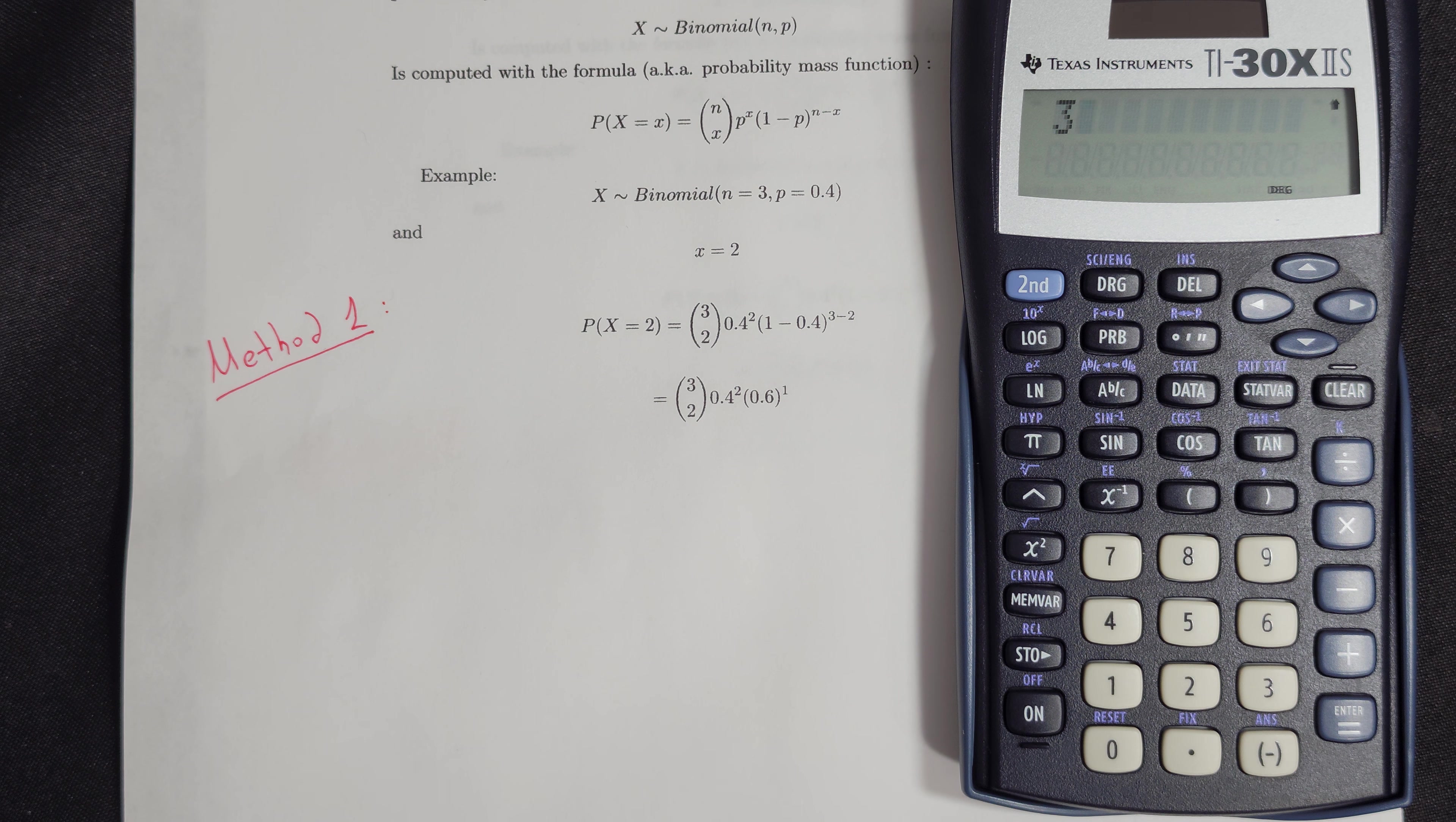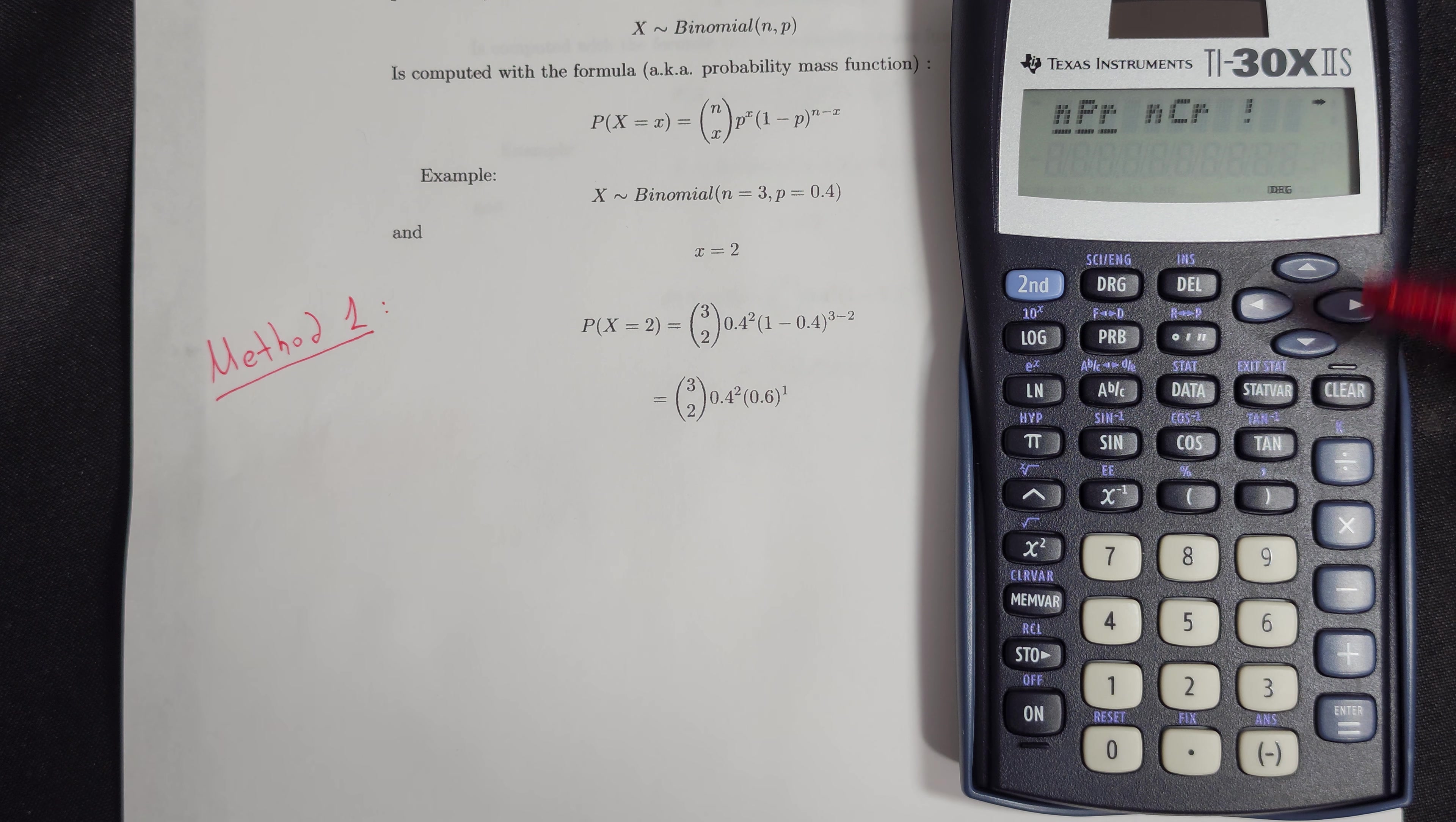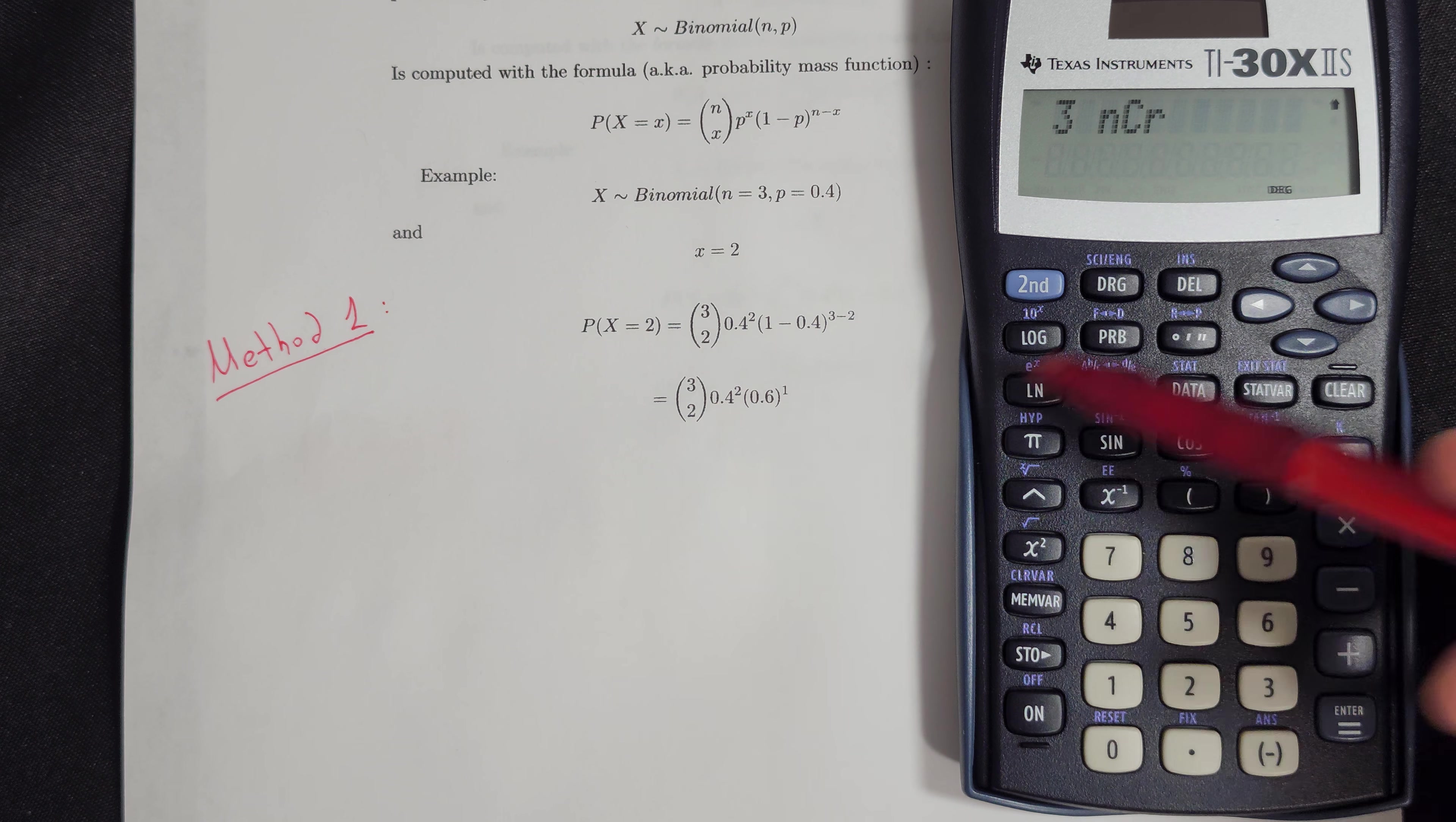Then the next step is to press this PRB button, that's the probability, and then we choose the NCR because we are interested in the combinations. So we press this right arrow and go in the middle and press enter or equal.